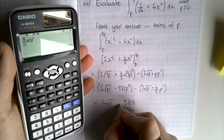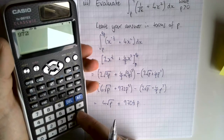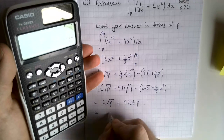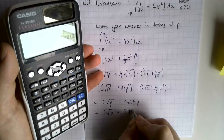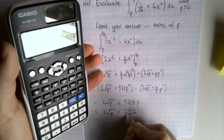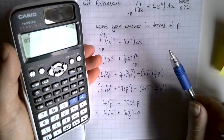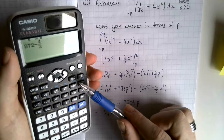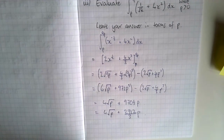So the answer in terms of p is 4 root p plus 970 and 2/3 times p cubed. And obviously I couldn't just type that into my calculator — it won't let me put algebra into the limits, and if it did that would be a type of calculator we're not allowed to use. So that is definite integrals.